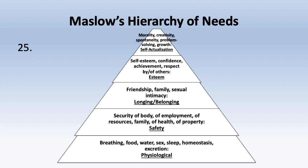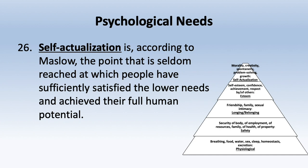Self-actualization is, according to Maslow, the point seldom reached at which people have sufficiently satisfied lower needs and achieved their full human potential — that's why the humanistic movement is sometimes called the human potential movement. Ideally we want a sense of self-actualization, but we must have lower-level needs met first.